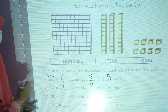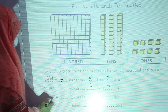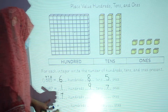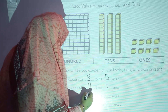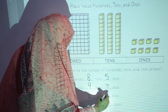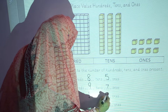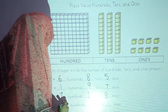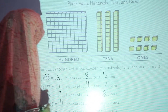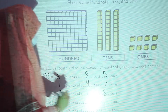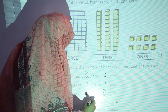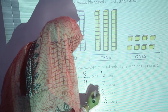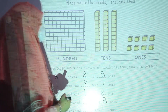In the third question: 700, 1 ten and 8 ones. In the fourth question: 400, 6 tens and 3 ones. In this way, you will complete your activity.